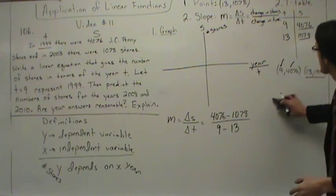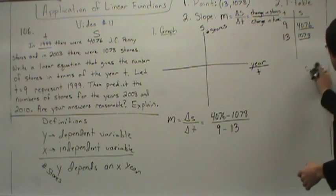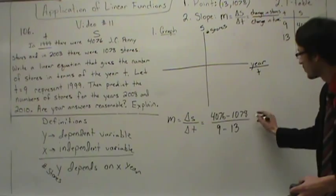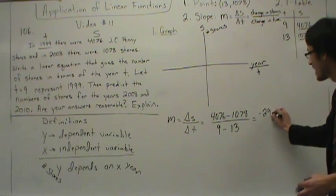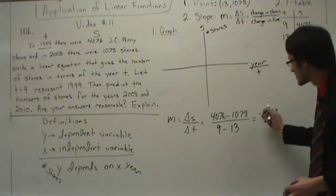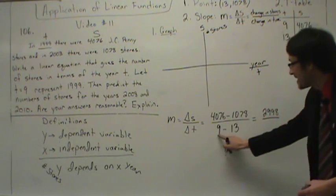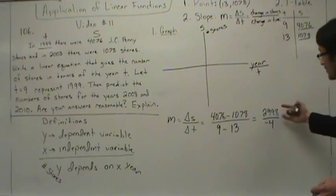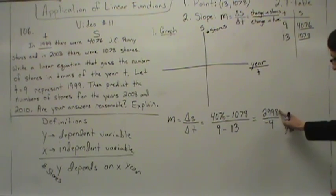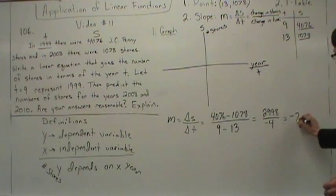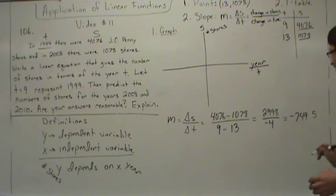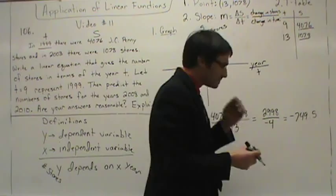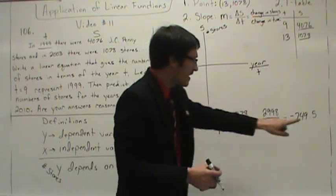If you'd like to use a calculator, that's fine. 4,076 subtract 1,078 is positive 2,998. And 9 minus 13 is negative 4. So 2,998 divided by negative 4 gives negative 749.5. You have just calculated your slope.